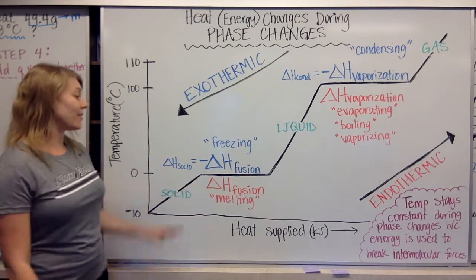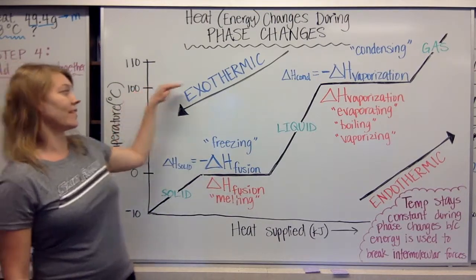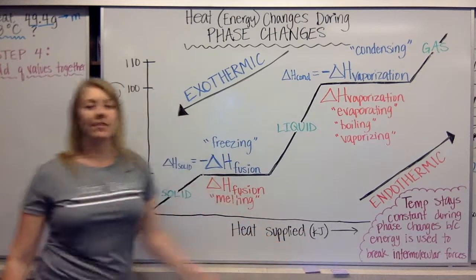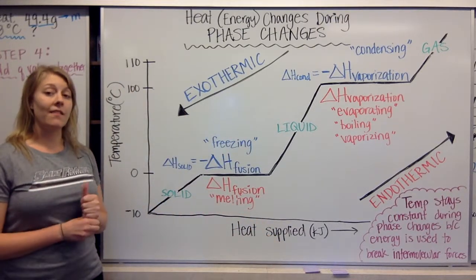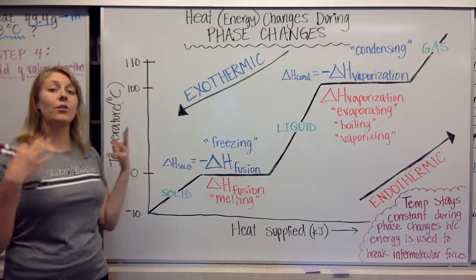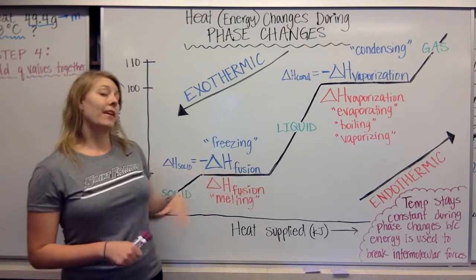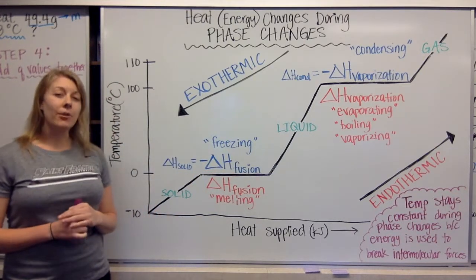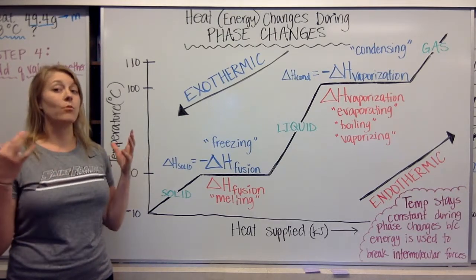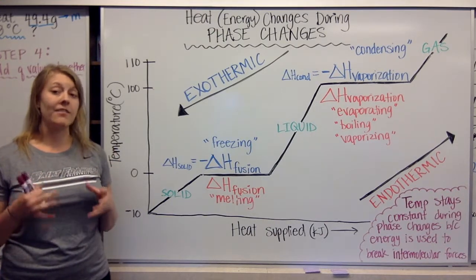The important thing for these flat lines is that the temperature is not changing — it's staying constant at zero degrees Celsius and constant at 100. The temperature is staying the same during these phase changes because there's a lot of energy either required or given off, because you have intermolecular forces within the substance that have to break in order to make that phase change happen.